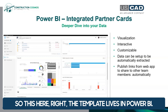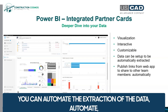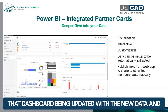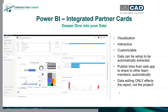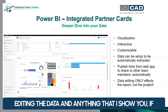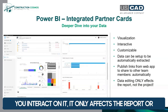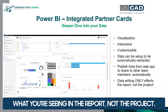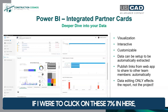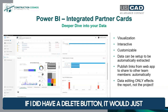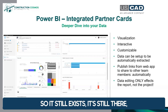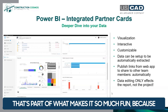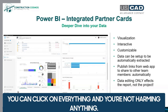The template lives in Power BI. The data is coming from Autodesk Construction Cloud. You can automate the extraction of the data, automate the dashboard being updated with the new data, and then have it refresh right here in your Insight card. If you edit the data, click on it, or interact with it, it only affects the report — not the project. It's entirely disconnected. So even if you clicked on those 7% and had a delete button, it would just remove that from the report, not from the project. It still exists. You don't have to worry about it — that's part of what makes it fun, because you can click on everything and you're not harming anything.